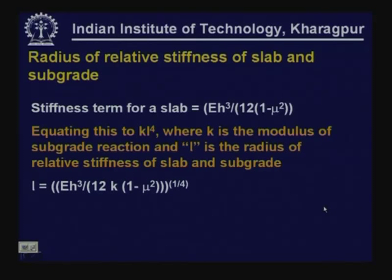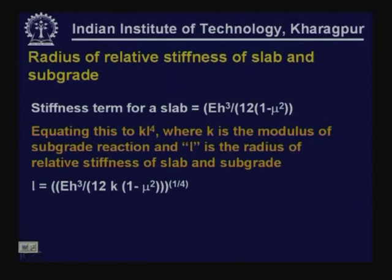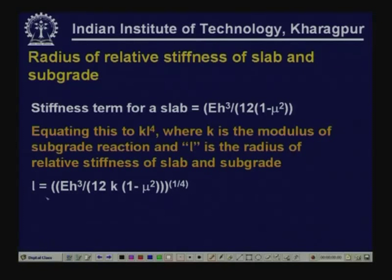Equating this to K·L⁴ — where K is the modulus of subgrade reaction and L is the radius of relative stiffness — L can be expressed in terms of E, h, K, and μ by the given expression. So L, the radius of relative stiffness of slab and subgrade, is given as a function of modulus value of concrete, thickness of concrete, modulus of subgrade reaction, and the Poisson ratio value of concrete.